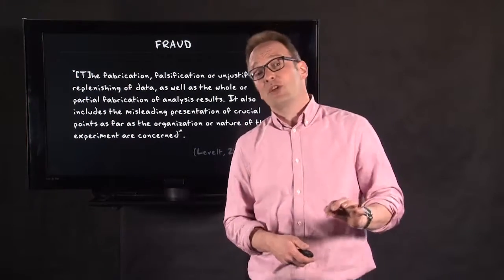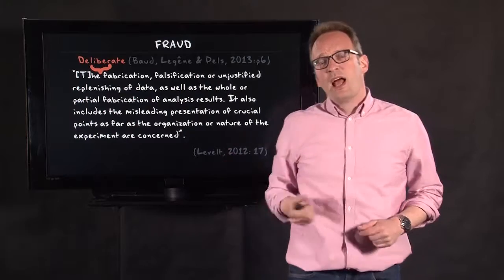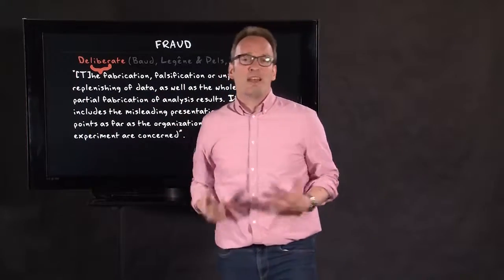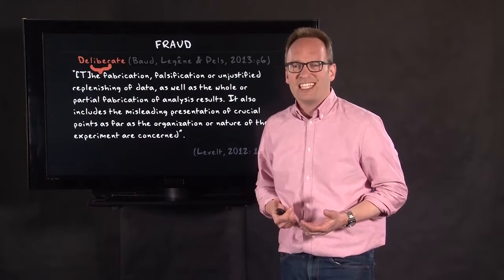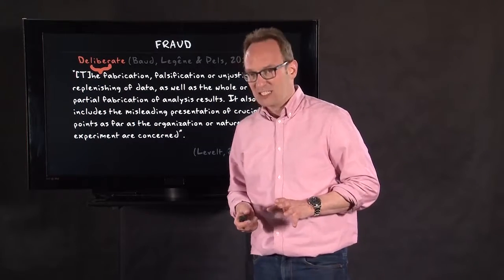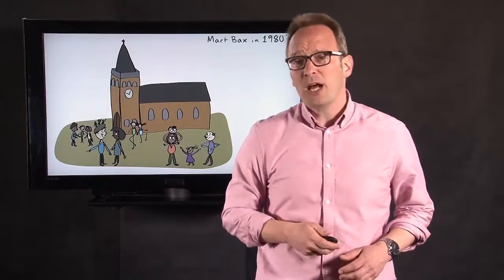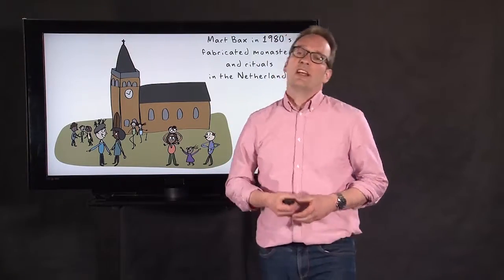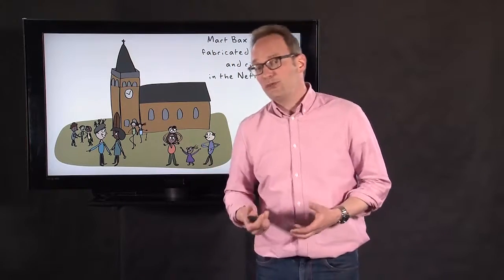Another committee that investigated fraud was the committee of Bord, Le Gien and Peirce. They added the deliberate aspect — it's about deliberate fabrication, falsification, and unjustified replenishing, not accidental error. This committee investigated the deeds of Marth Box, who had done fieldwork in the 1980s in the south of the Netherlands into a monastery and special rituals. But research in the 2000s revealed he fabricated it — this monastery did not exist, and the rituals he wrote about did not exist at all.